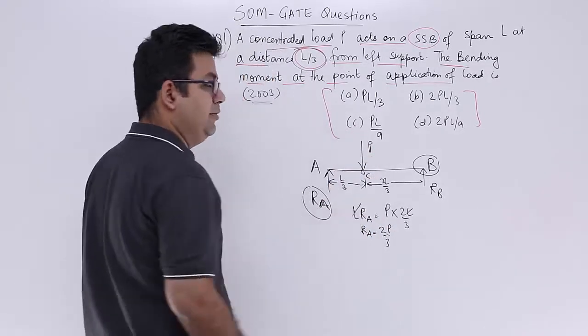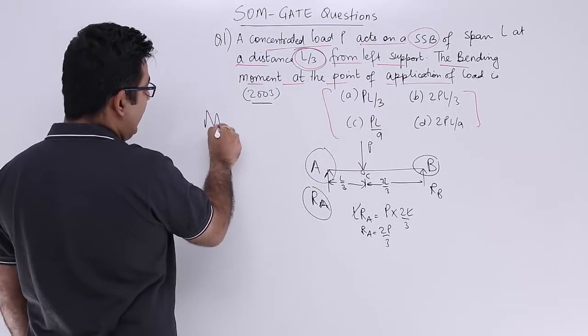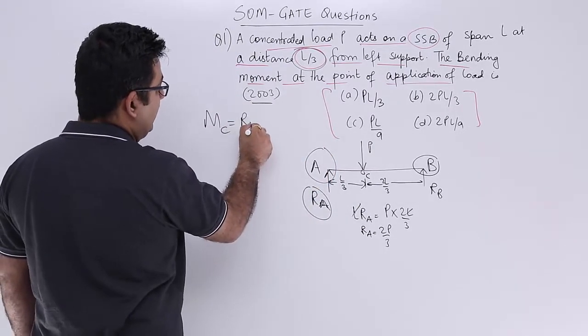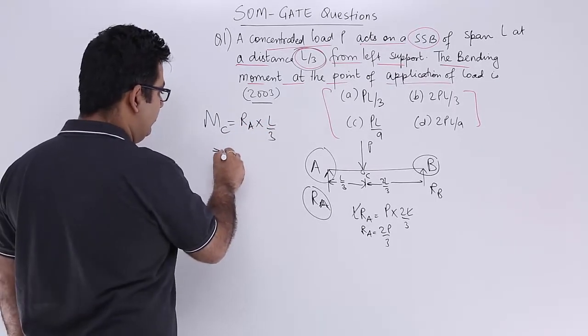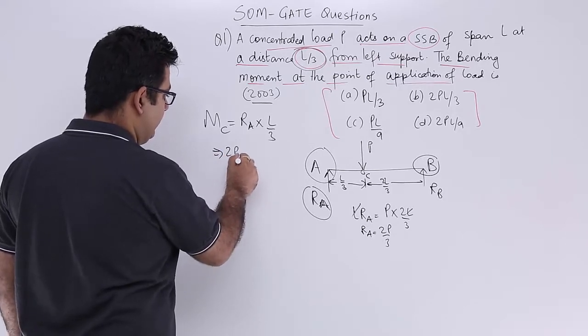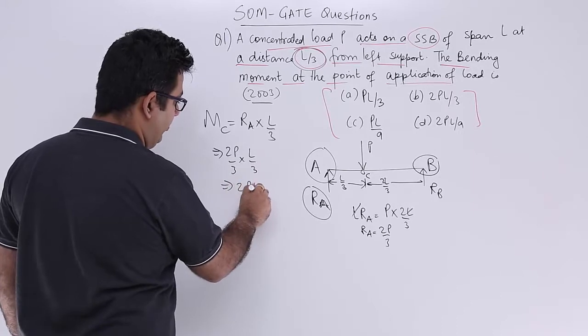Now I need to find out moment at point C. Again starting from the left hand side, the moment at point C is nothing but RA into L by 3. RA is given to be 2P by 3 into L by 3, which will give you 2PL by 9.